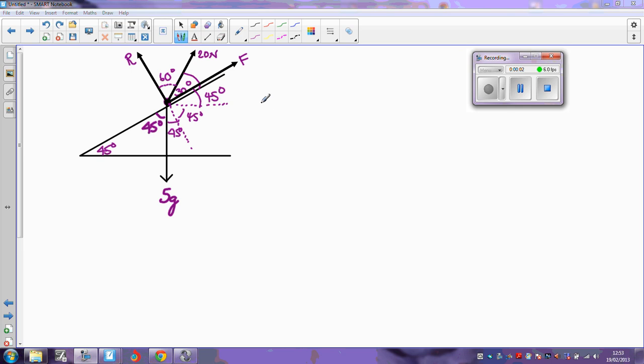Question 5, we've got a particle which is resting on the slope. Here's my particle. The weight of the particle is 5g newtons, that's acting vertically downwards. There's a force acting at 20 degrees to the line of greatest slope, you can see that here.